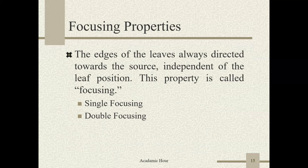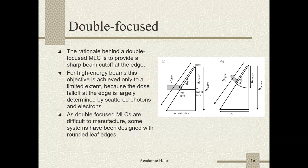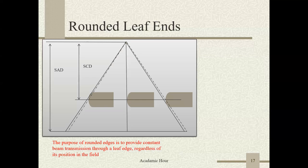Focusing property: the edge of the leaves is always directed toward the source independent of leaf position — this property is called focusing. There are two types: single focusing and double focusing. The rationale behind double focused MLCs is to provide sharp beam cut-off at the edge. For high energy beams, this objective is achieved only to a limited extent because the dose fall-off at the edge is largely determined by scattered photons and electrons. Double focus MLCs are difficult to manufacture, so some systems have been designed with a rounded leaf edge. The purpose of the round edge is to provide constant beam transmission through the leaf edge regardless of position in the field.